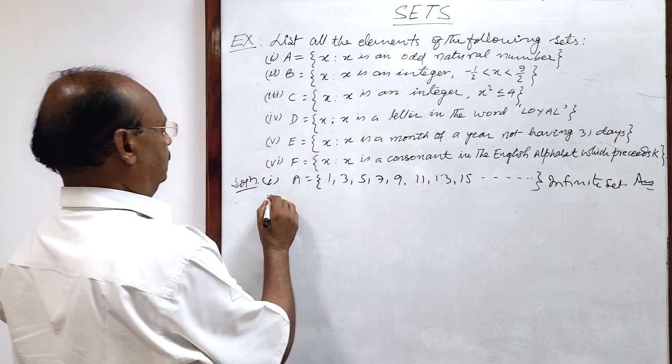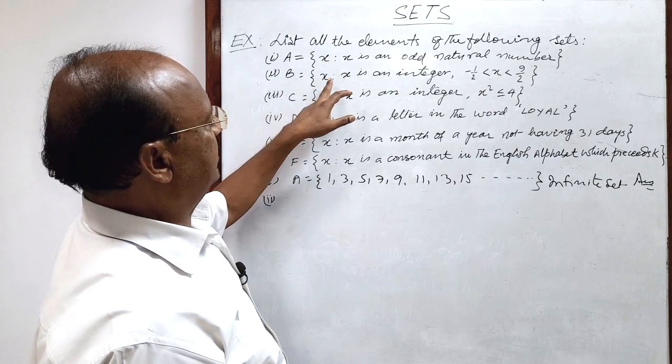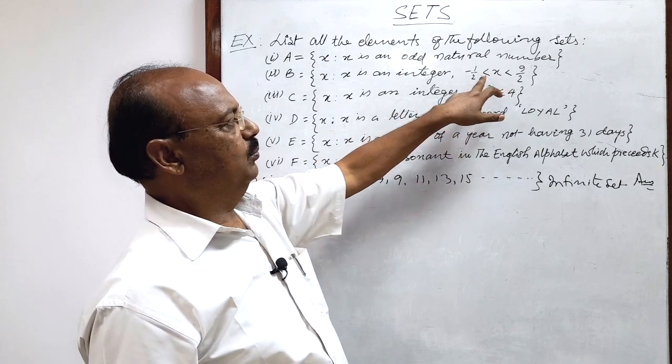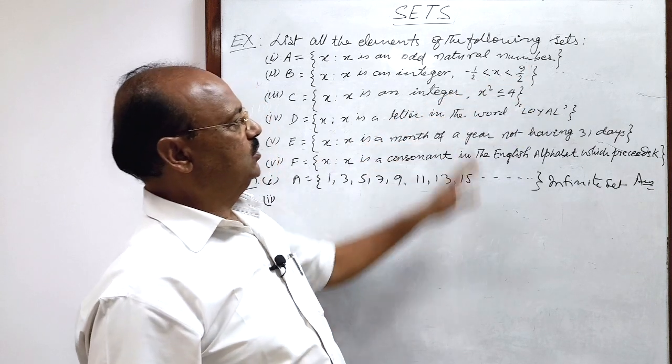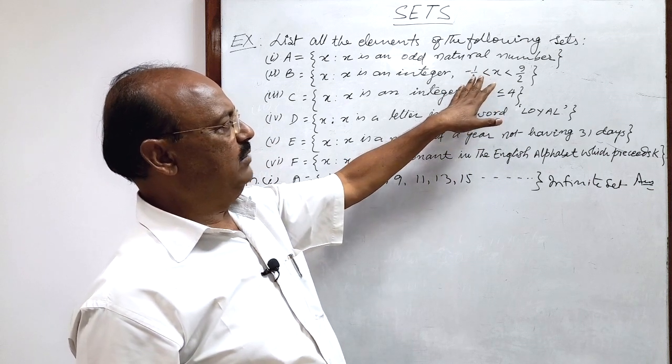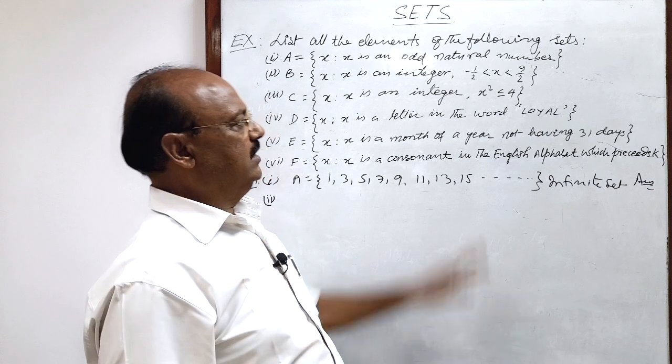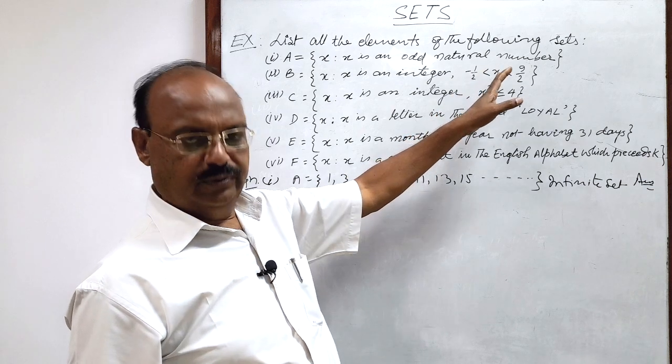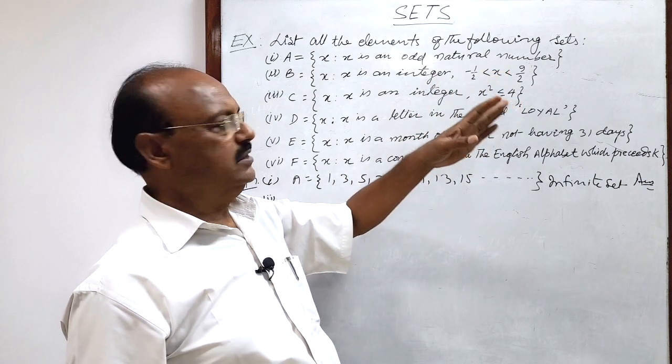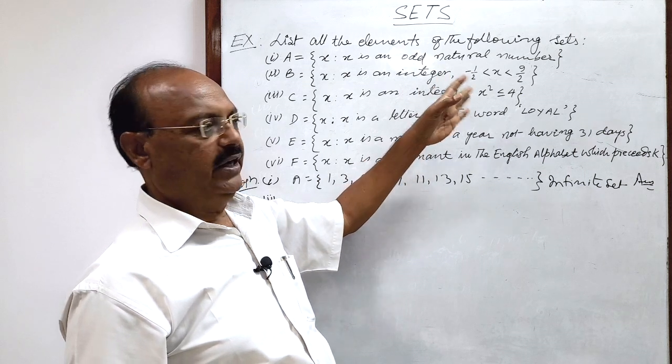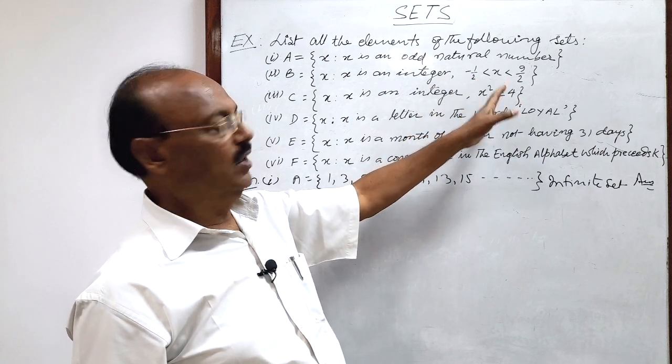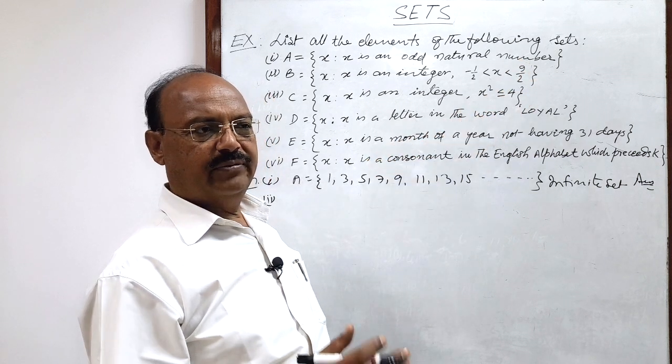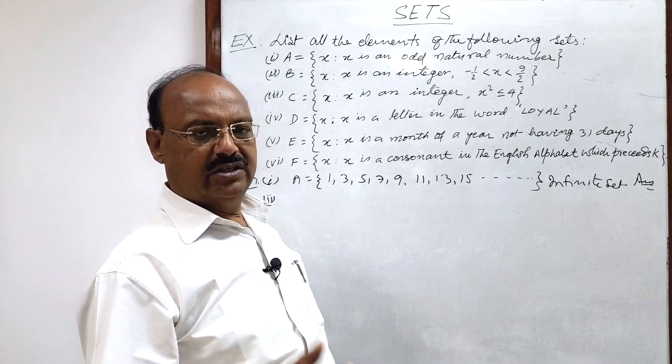Now second part of this question, b is a set such that x is an integer between minus half and 9 by 2. So integer should be here between minus half and 9 by 2. Minus half means minus 0.5, so we will start with 0. Integer greater than minus 0.5 will start with 0 and less than 4.5. 9 by 2 is 4.5, so less than 4.5 the last integer will be 4.